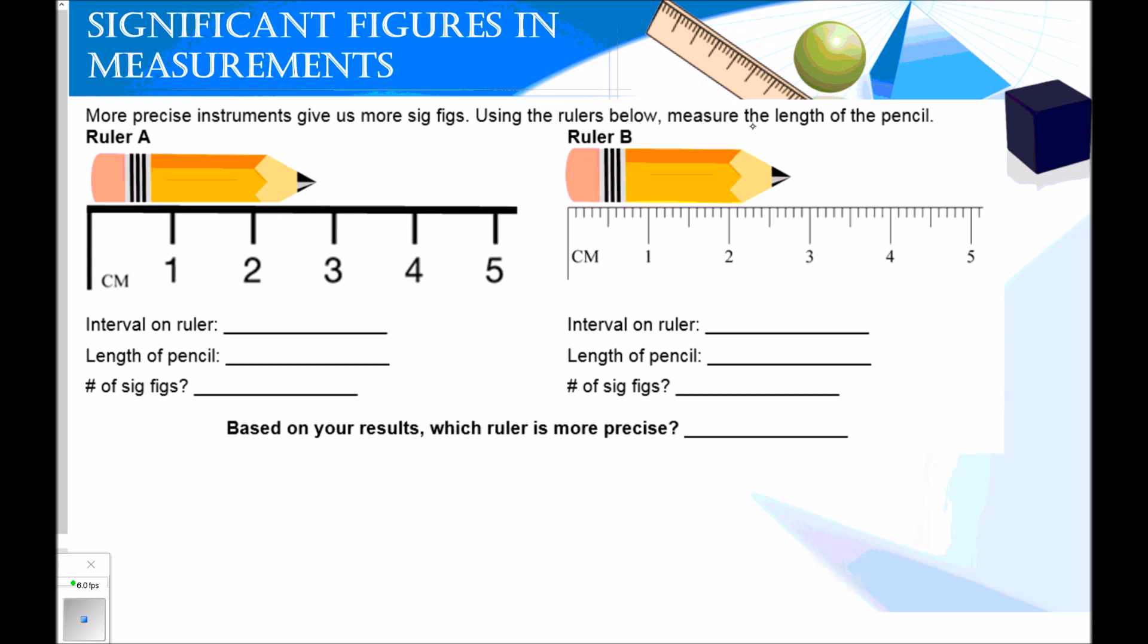More precise instruments give us more significant figures. Using the rulers below, measure the length of the pencil. Using this ruler, my interval is only by one centimeter. So I'm going to estimate the tenth's place on this particular measurement. So the length of the pencil is a little bit more than two. So I'm going to say it's 2.7 centimeters. The tenth's place is estimated. There's no way for me to see that this is exactly 0.7. It's just my best guess. It's an estimate. So it's going to have some error in that very last digit since it's estimated by me. So the number of sig figs is 2 in this particular measurement.